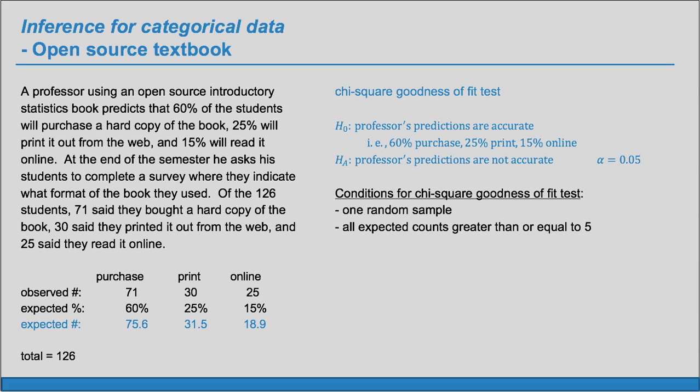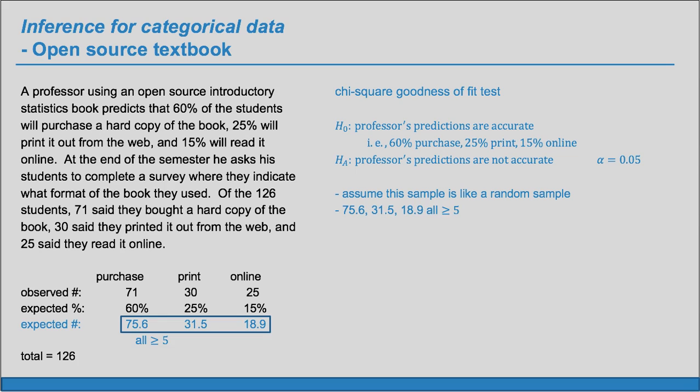Before we proceed, we can check the conditions for the chi-square goodness-of-fit test. We need one random sample, and all expected counts to be greater than or equal to 5. The professor gave this survey to his students, so they're technically not a random sample. So we'll have to just assume that this sample is like a random sample in order for this test to really be meaningful. Our expected counts are greater than or equal to 5.